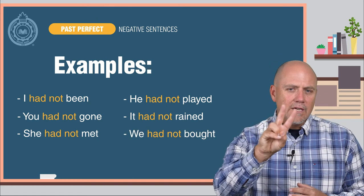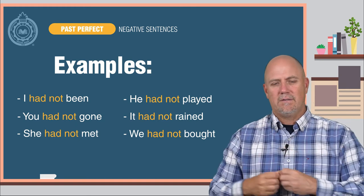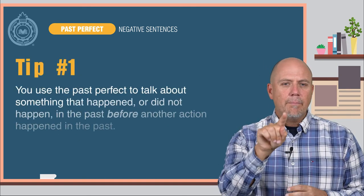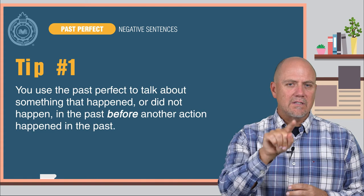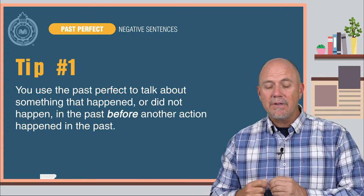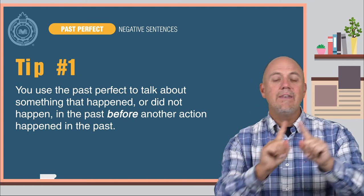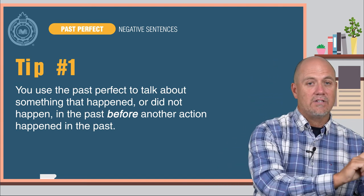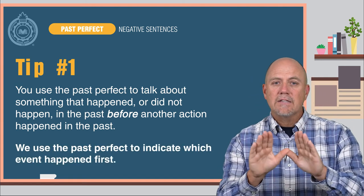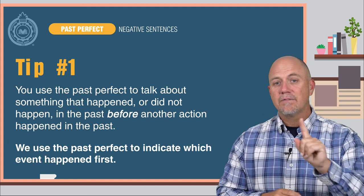Here are two tips to help you understand and use the past perfect. Tip number one: you use the past perfect to talk about something that happened or did not happen in the past before another action happened in the past. We use the past perfect to indicate which event happened first.